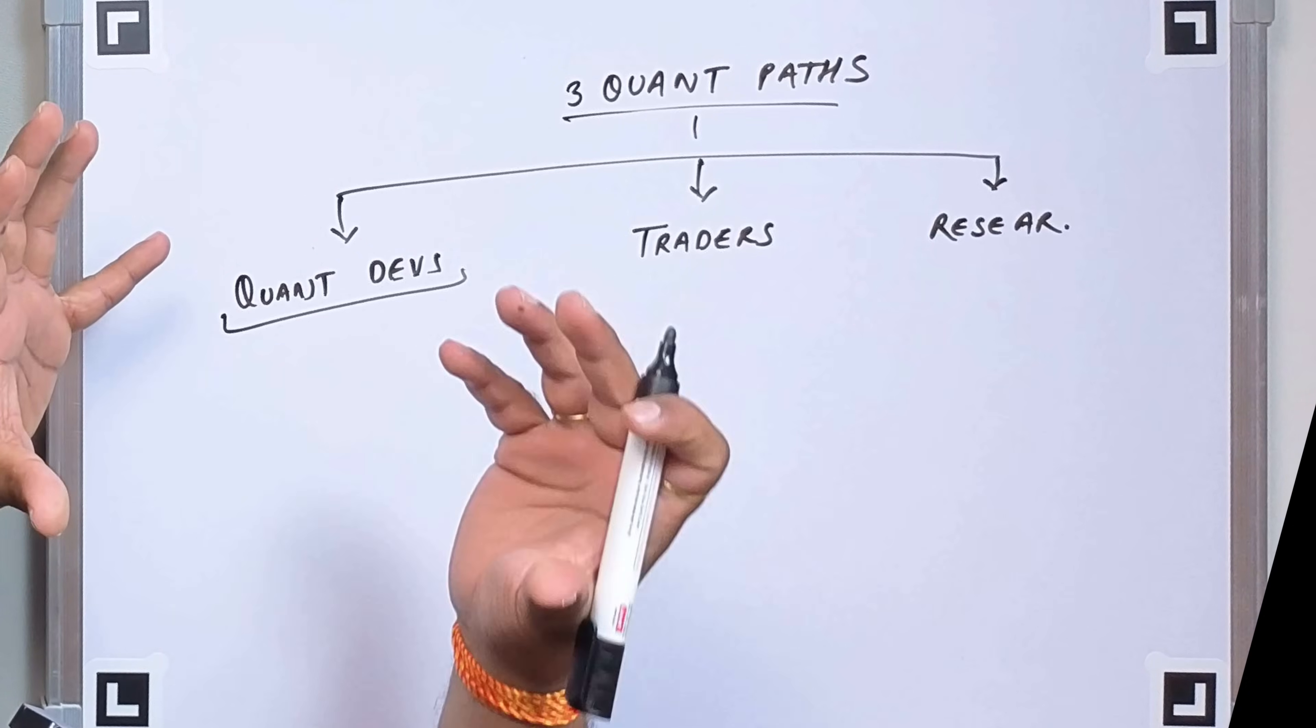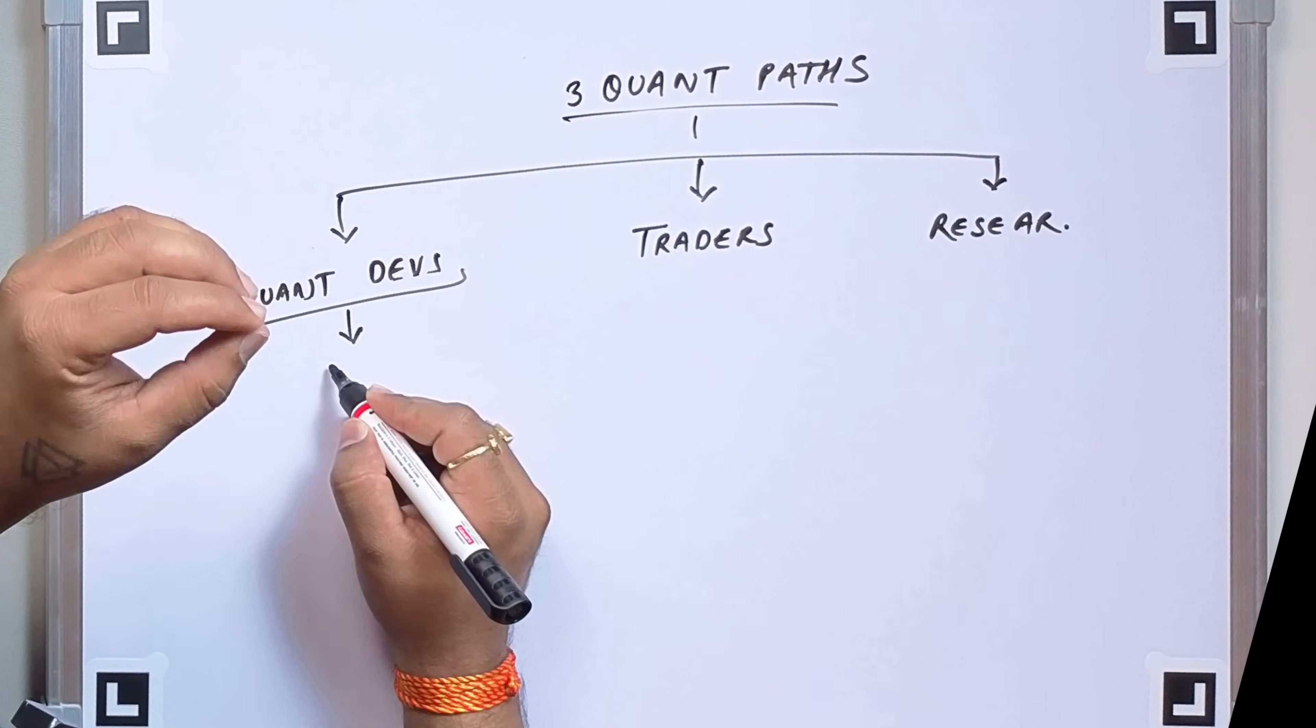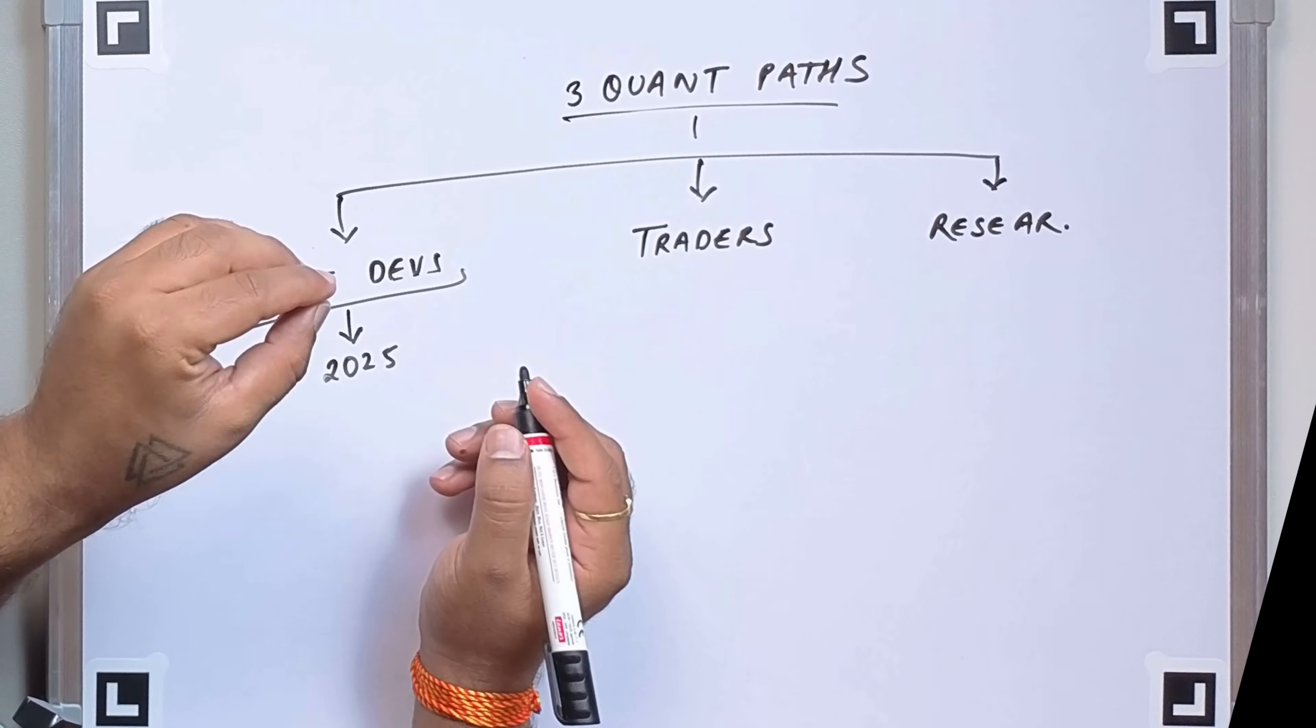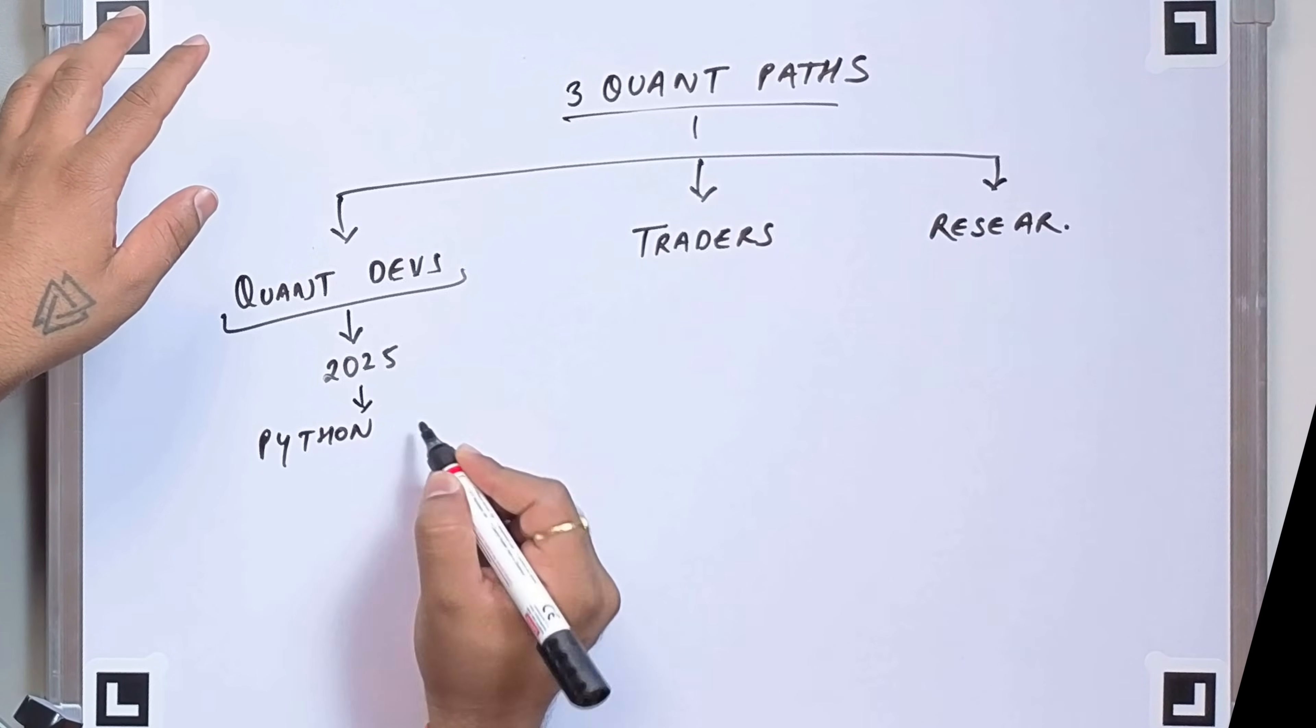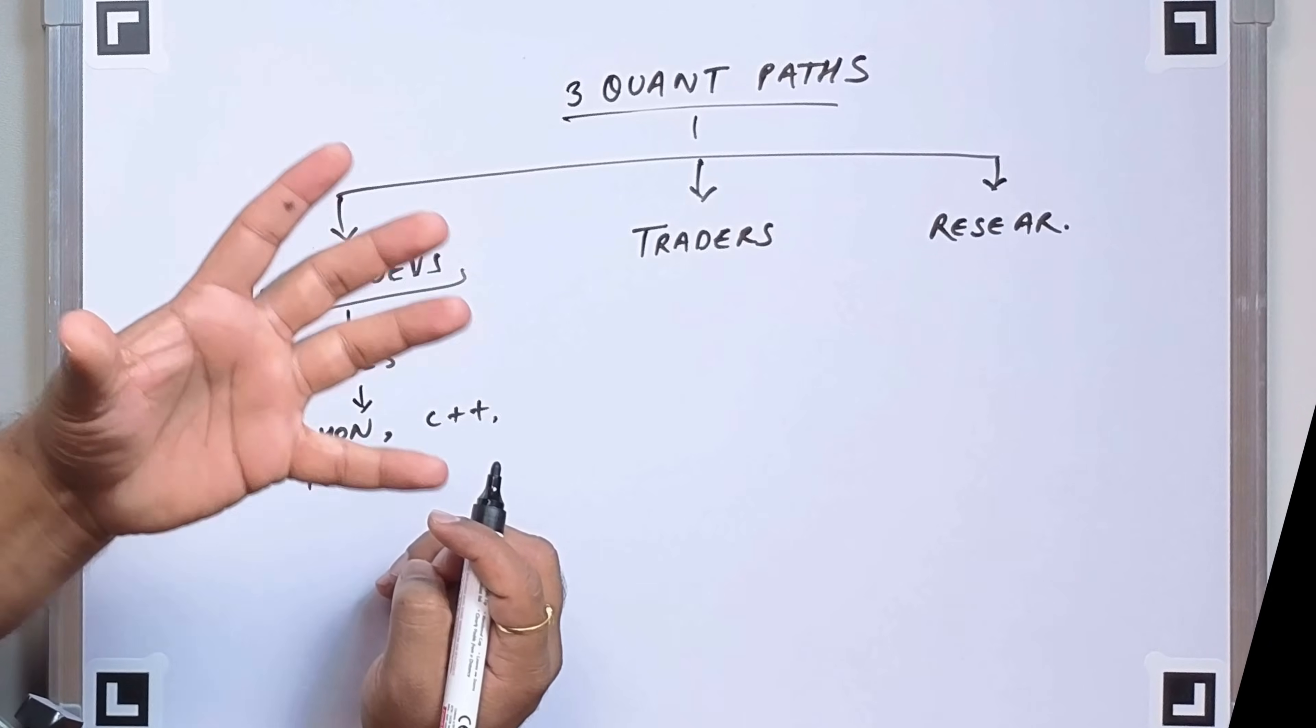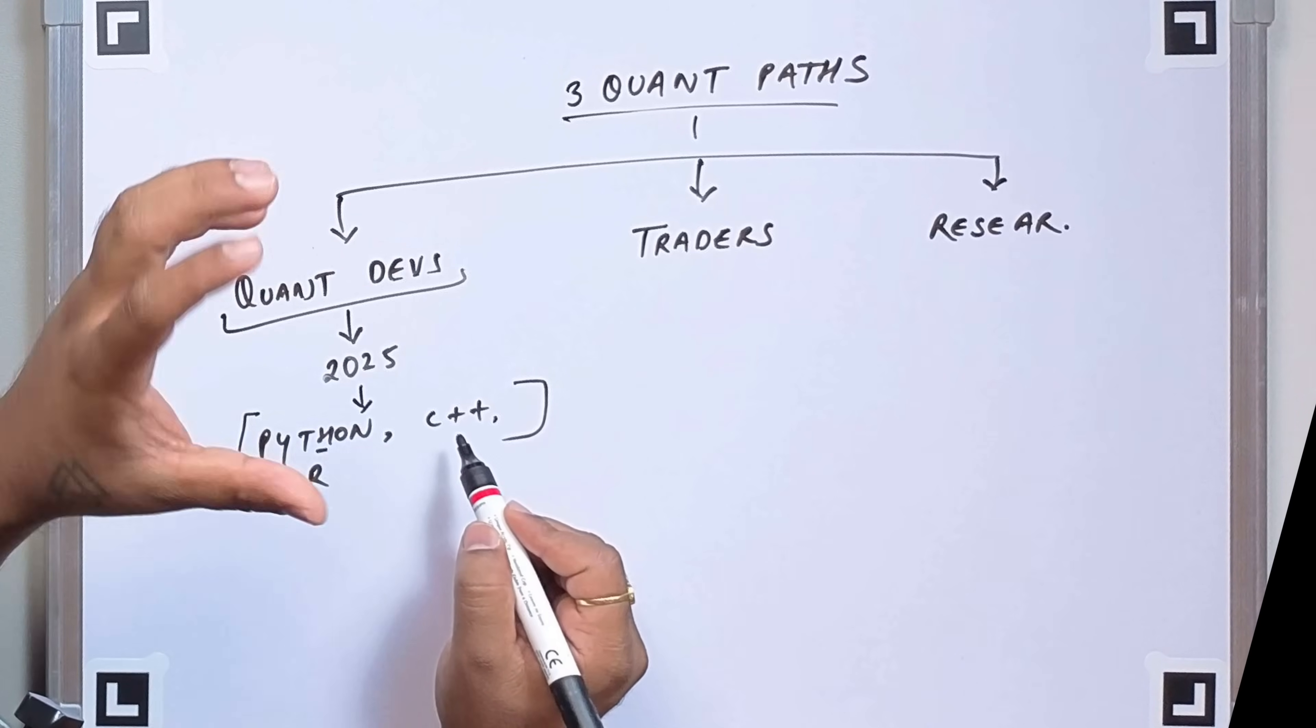First, we have the quant developers, the architects who build the financial fortress. These are the coding masters who transform mathematical theories into powerful systems that can execute thousands of trades per second. In 2025, the essential languages remain Python for rapid prototyping and C++ for performance critical components. But it's not just about knowing the syntax. It's understanding the underlying systems at a fundamental level. So we can say mainly we have Python, C++, and also if you are more into the data science field, it can be R also. But mainly you start with these languages. You can just start with Python, and along the way it depends on your role that you might need C++ or R.